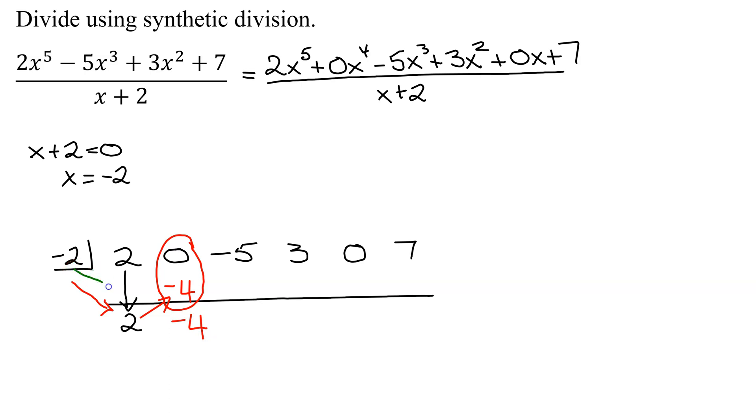Next we multiply negative 2 times negative 4. You write the answer up here. Negative 2 times negative 4 is positive 8. Add these two numbers: negative 5 plus 8 is 3.